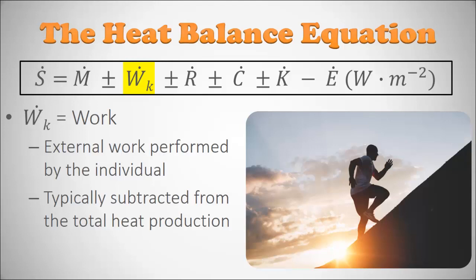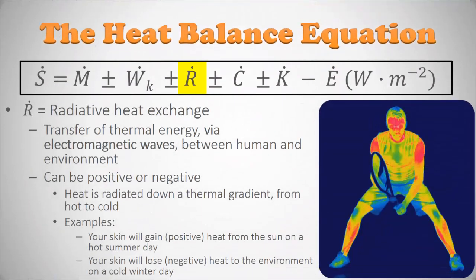W stands for work — the external work performed by the individual — and this will be subtracted from the total heat production. It normally represents a pretty significant source of heat production. Think of it as running or exercising; it defines the physical definition of work as a change in mass from low to high. Both metabolic heat production and work are generally going to cause the body to heat up, which is why we need heat dissipation methods.